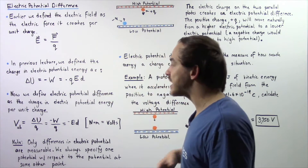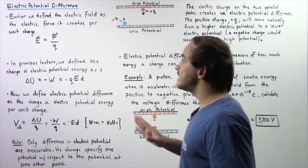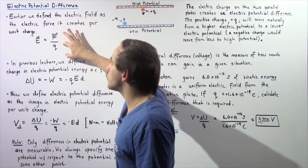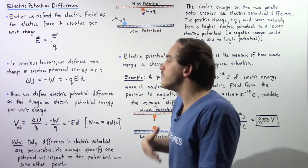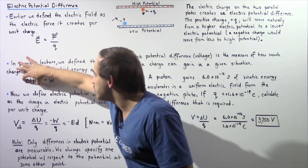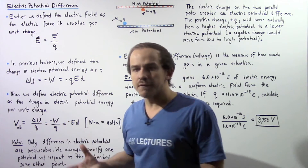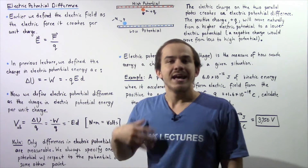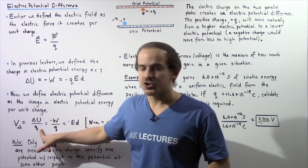This equation only works as long as our electric field is assumed to be constant. In the same way that we found it useful to define the electric field as the force per unit charge, we define something called the electric potential difference, or simply the voltage difference, as the change in electric potential energy (change in U) per unit charge. So the voltage difference between two points A and B equals the change in electric potential energy between those two points divided by the unit charge Q.